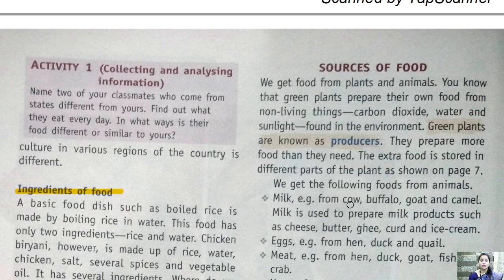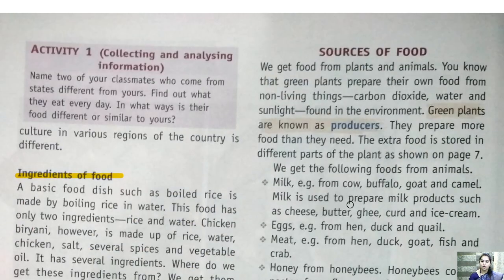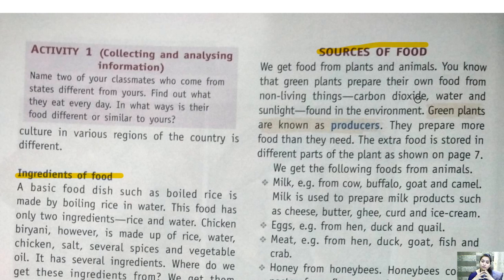Moving to the main topic of this chapter — sources of food. There are basically two main sources of food: plants and animals. Now, how do plants provide us with food? Green plants can prepare their own food, and hence they are called producers.